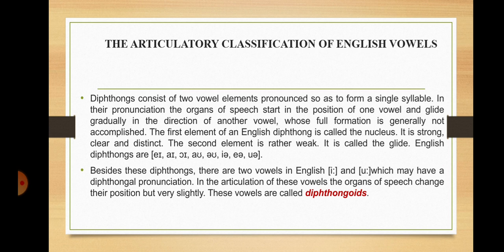Diphthongs consist of two vowel elements pronounced so as to form a single syllable. In their pronunciation, the organs of speech start in the position of one vowel and glide gradually in the direction of another, whose full formation is generally not accomplished. The first element of an English diphthong is called the nucleus — it is strong, clear, and distinct. The second element is rather weak and is called the glide. English diphthongs are: eɪ, ɔɪ, əʊ, aʊ, ɪə, eə, ʊə. Besides these diphthongs, there are two vowels in English, e and u, which may have a diphthongal pronunciation; these are called diphthongoids, as the organs of speech change their position only very slightly.